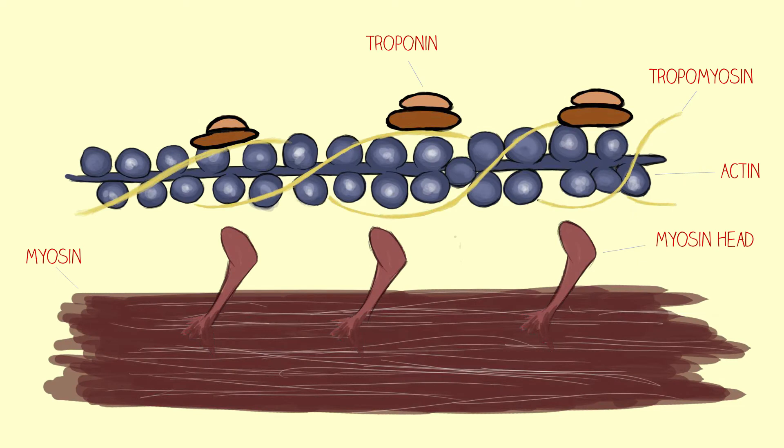Also at relaxation, tropomyosin proteins are held in place by troponins on the actin filaments, blocking the myosin binding sites. As such, myosin heads are separate from the actin filaments.